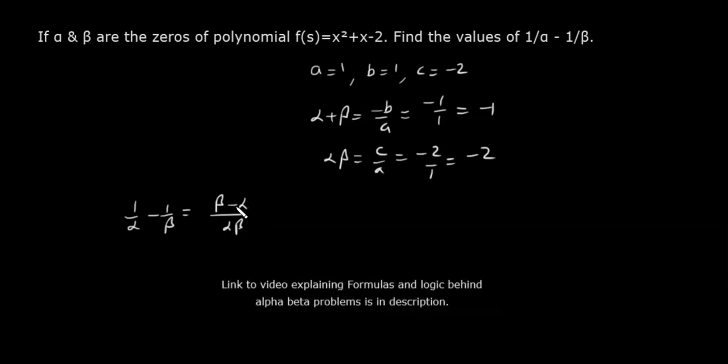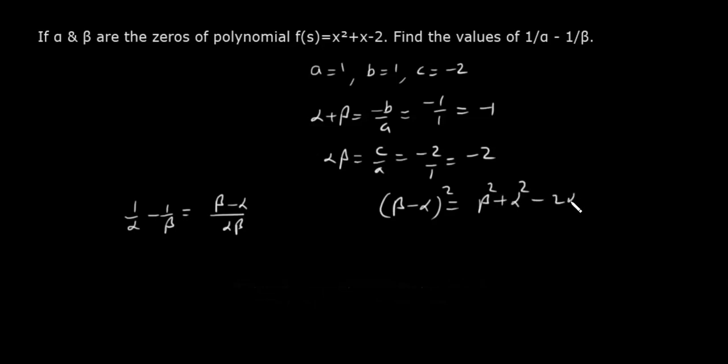Ab yahaan par beta minus alpha ki value kaise niklegi? This is very important. Beta minus alpha ka whole square likhte hain. Yeh banega beta square plus alpha square minus 2 alpha beta. Iski value hamare ko maloom hai, alpha plus beta ka whole square minus 2 alpha beta hoti hai. Aur yeh to alag hai. To total mein yeh formula ban gaya.